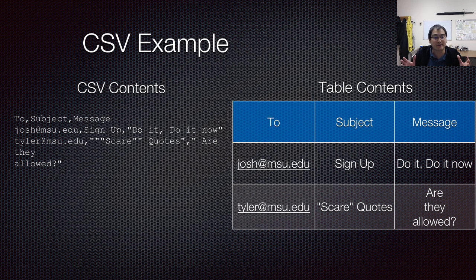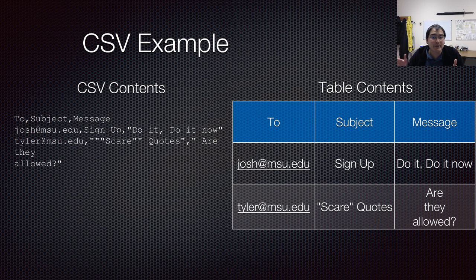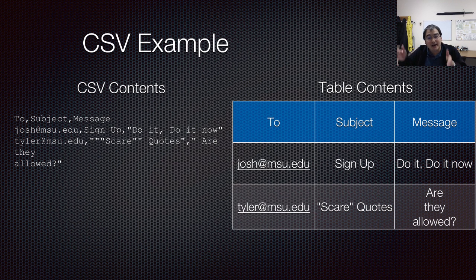Let's look at an example CSV file. On the left we have the text in a CSV file — new lines appear after 'message', after the double quote on the next line, and after the last double quote entirely. This gets turned into a tabular format on the right. The 'to', 'subject', and 'message' fields each form their own columns. The first line is the names of the fields, so 'josh@msu.edu' goes into the first box, 'sign up' into the next, and 'do it, do it now' into the message box. The double quotes are not actually part of the field — they're just part of how you specify the field.